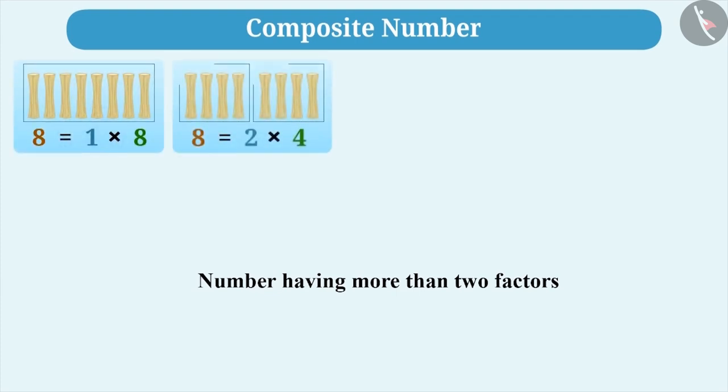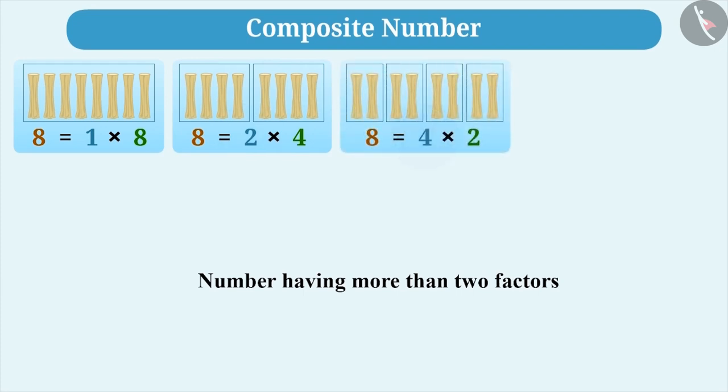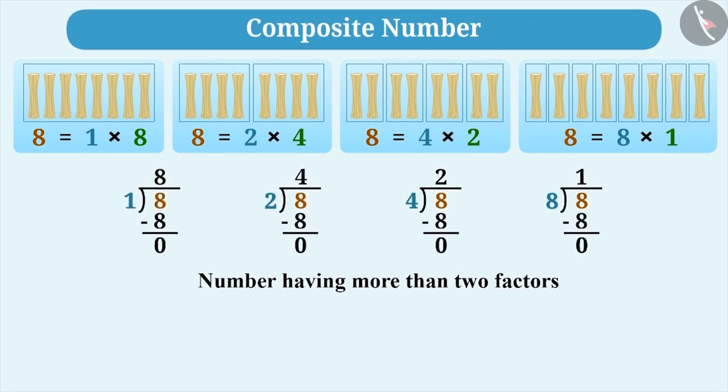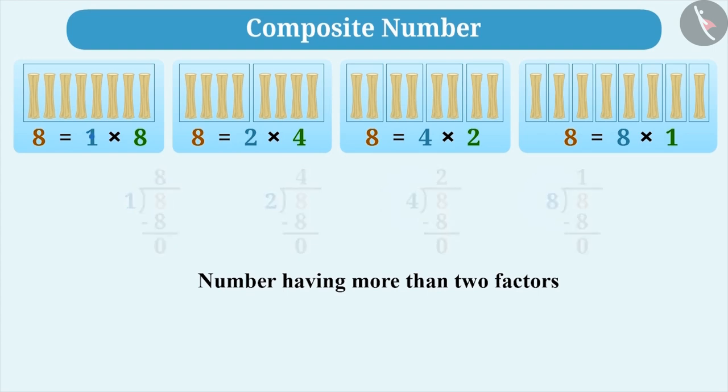On the contrary, there are numbers which have more than 2 factors. For example, if we take 8 sticks, we can divide them equally in groups of 1, 2, 4, or 8. This is because 8 is divisible by 1, 2, 4, and 8, which means 1, 2, 4, and 8 are the factors of 8.